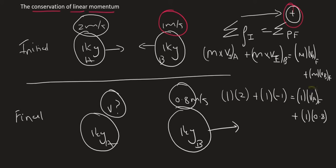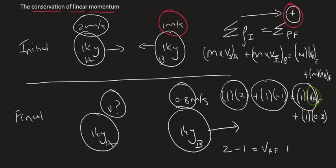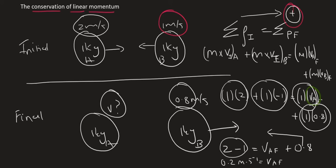The only unknown in that entire equation is the velocity of A. That gives us 2 minus 1 equals the velocity of A final plus 0.8. So 1 minus 0.8 gives us the velocity of A final equal to 0.2 meters per second. Because we're getting a positive answer and we chose right as positive, the velocity of A final is 0.2 meters per second to the right.